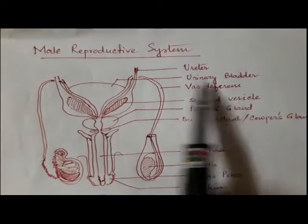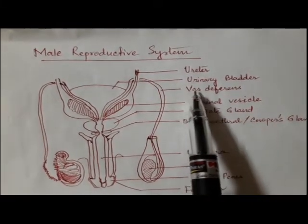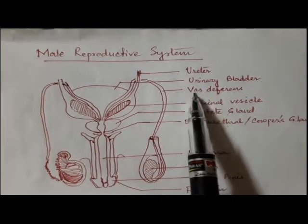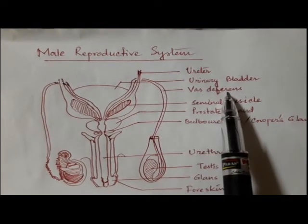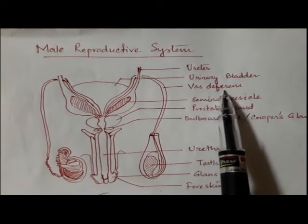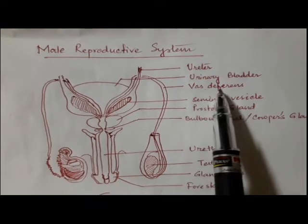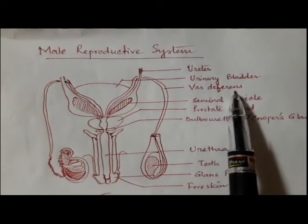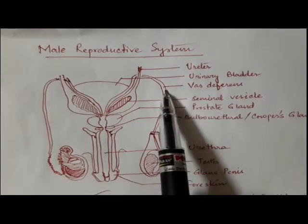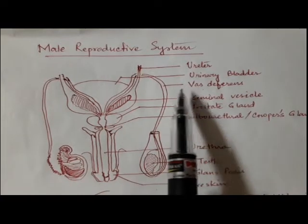One by one we will talk about all these portions. Here you can see the tube-like structure which is named as vas deferens, also known as vasa deferentia and commonly known as sperm duct. These are actually muscular tube-like structures which are present on both sides as you can see.